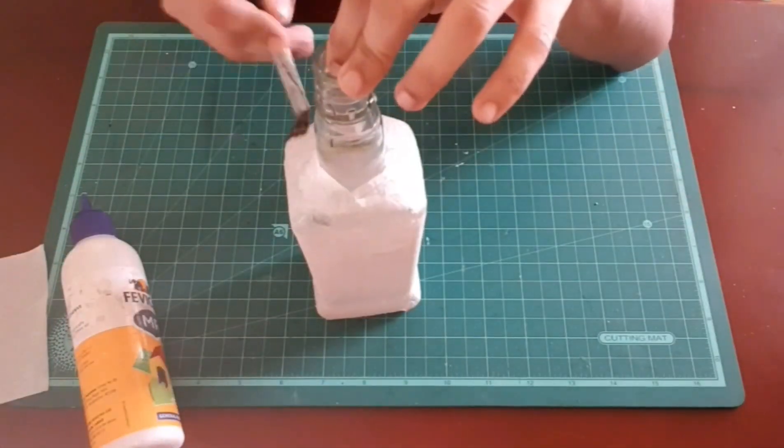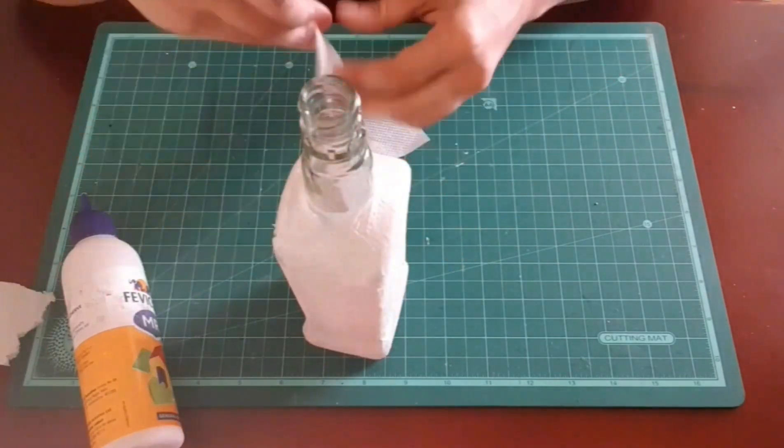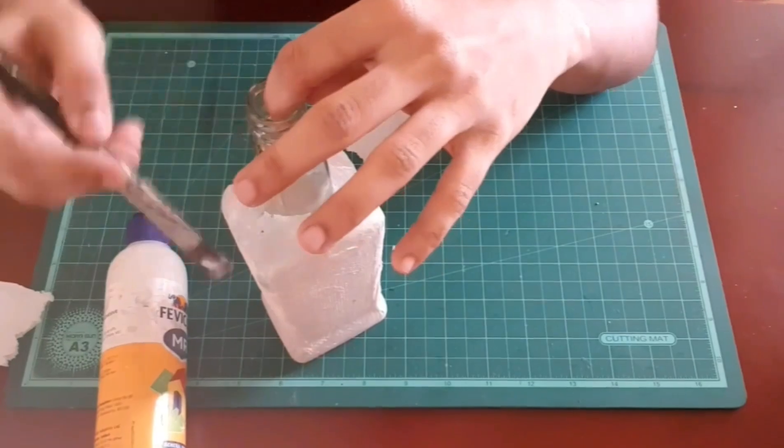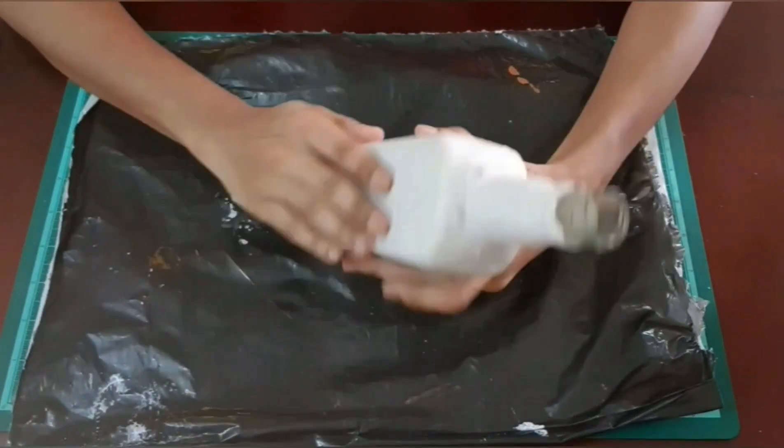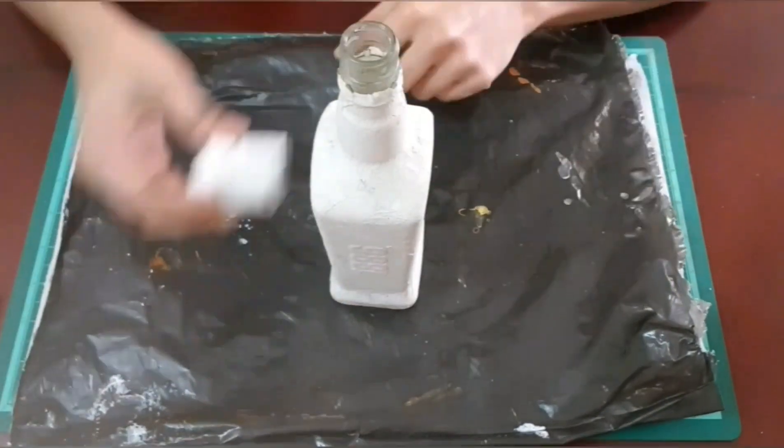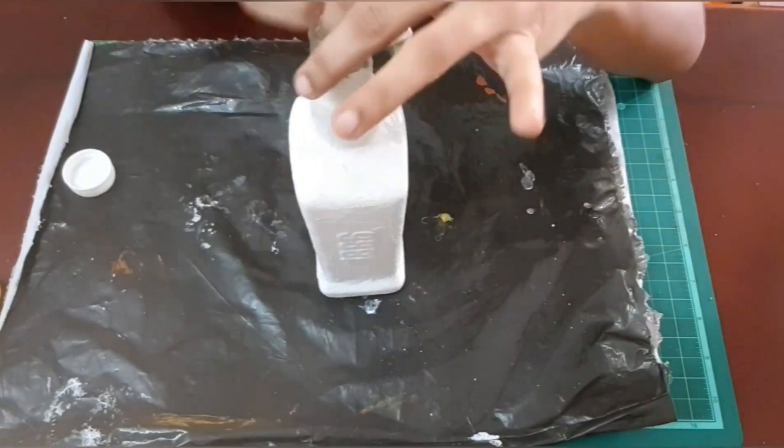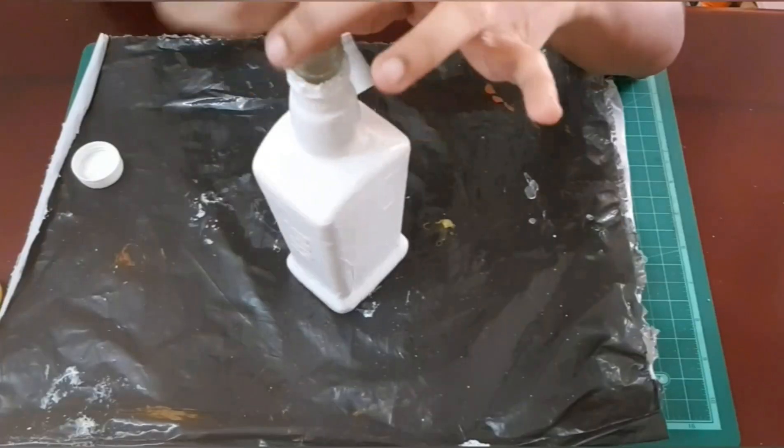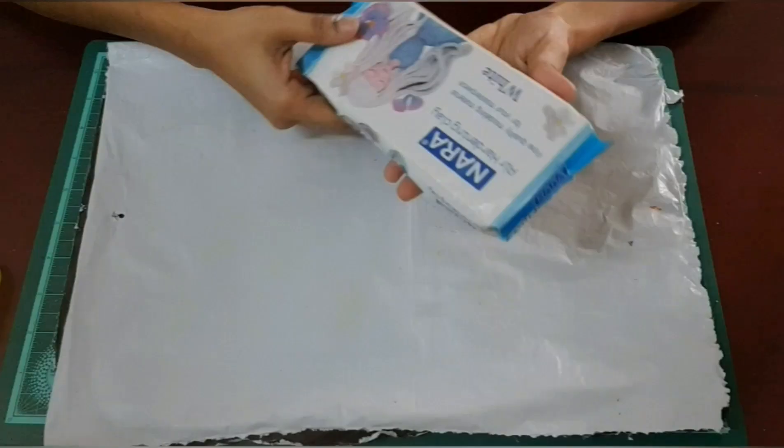Allow the bottle to dry completely. In this method the bottle dries quicker and I prefer this method as it's very easy. The bottle is dried completely. I am giving three coats of acrylic color. My bottle is going to have a white base so I have given three coats. You can even use any kind of white emulsions also.